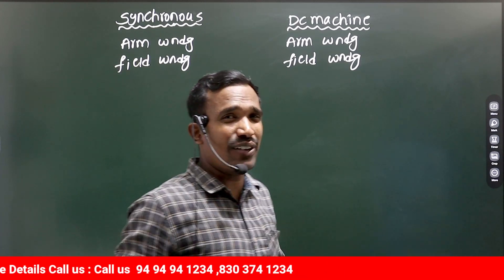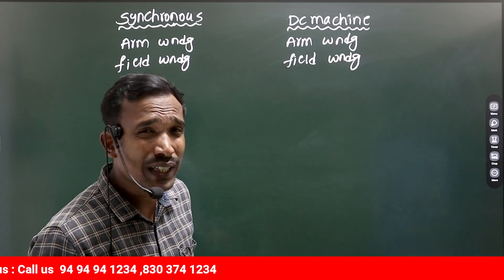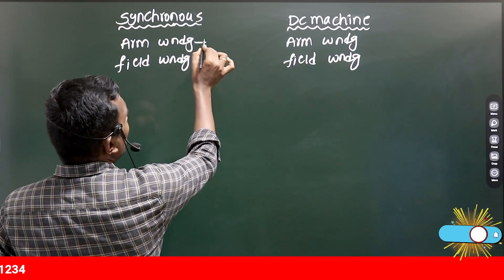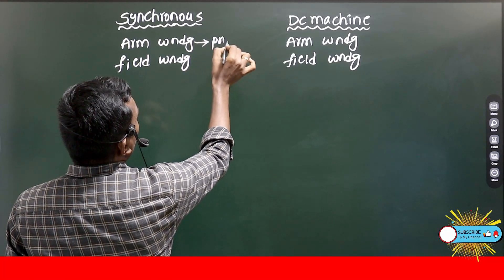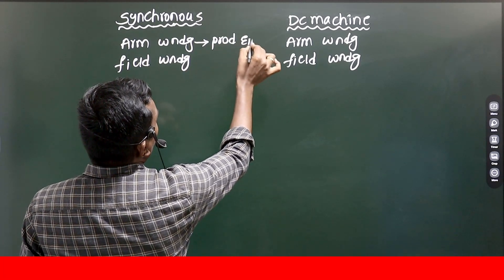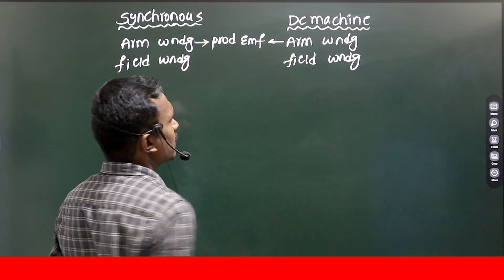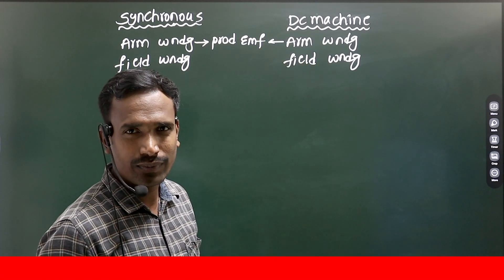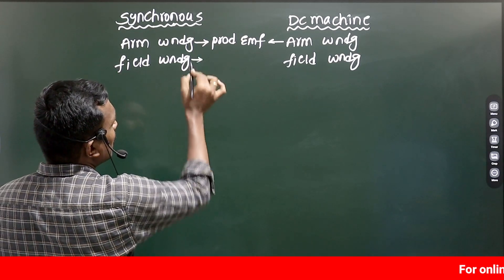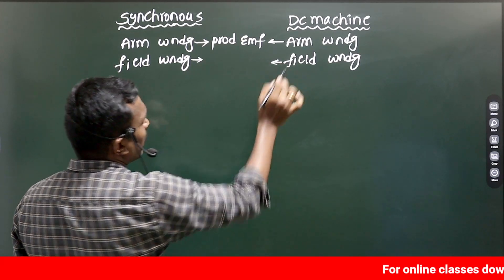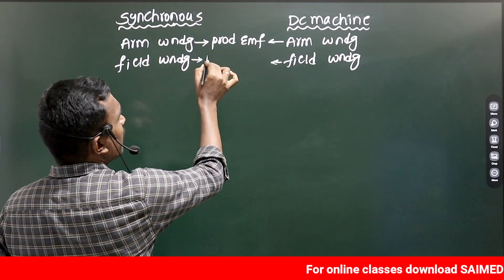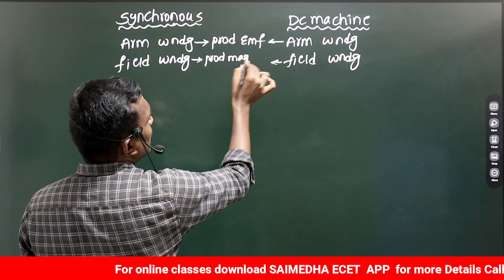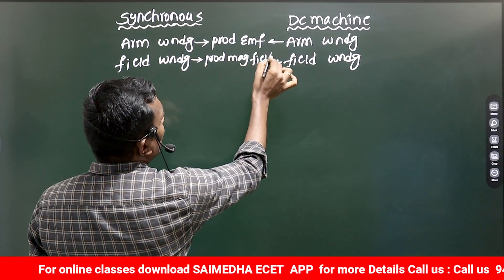What is armature winding? Armature winding is nothing but the winding which produces the EMF. Simply, the armature winding will produce the EMF. And what is field winding? The field winding is the winding which produces the magnetic field.